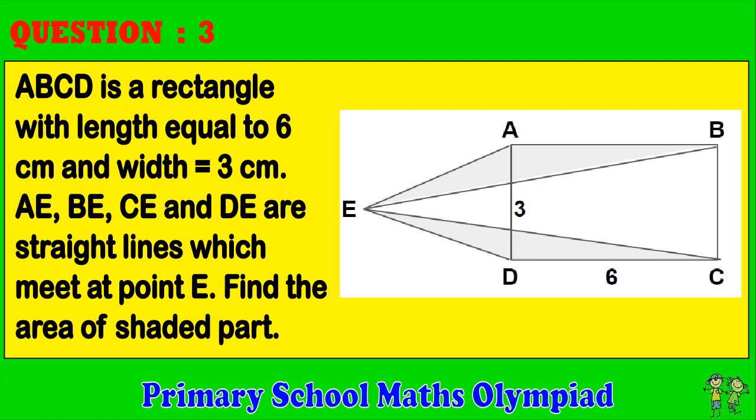Question 3. ABCD is a rectangle with length equal to 6 cm and width equals 3 cm. AE, BE, CE, and DE are straight lines which meet at point E. Find the area of the shaded part.